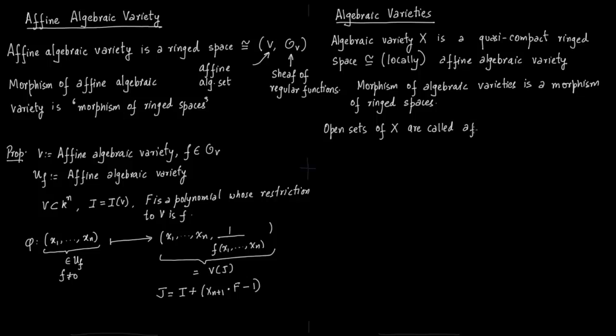Open sets of X which are isomorphic to affine algebraic varieties are called affine open sets of X. So you could have open sets of X also.